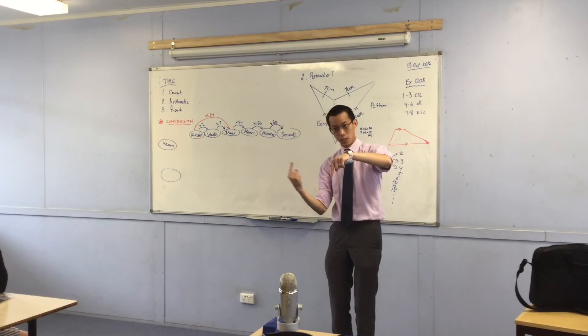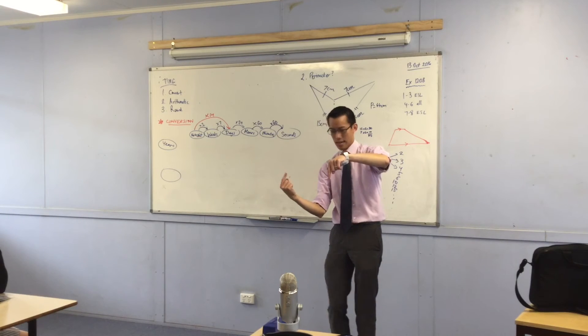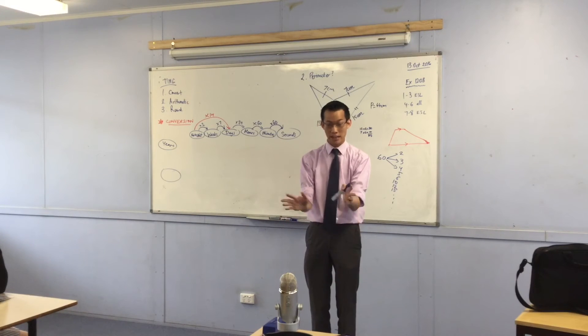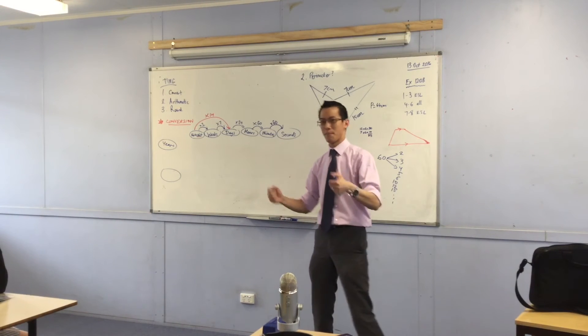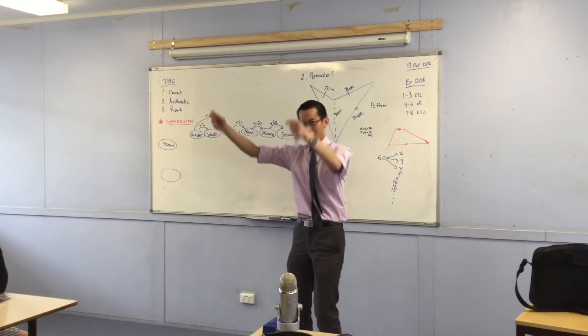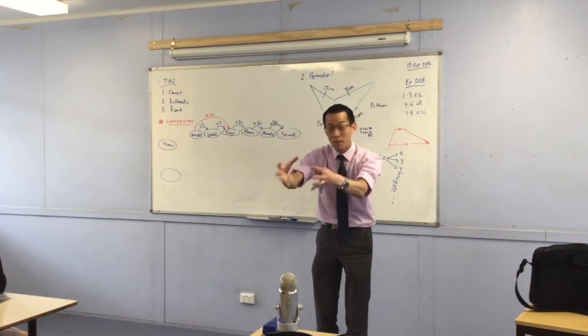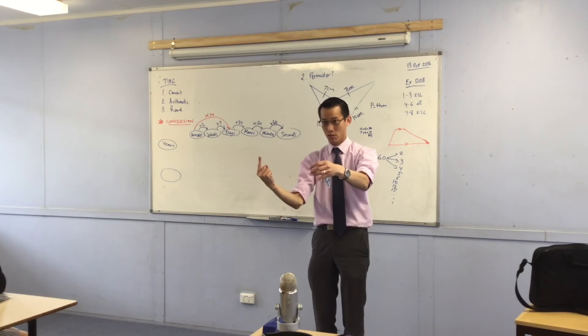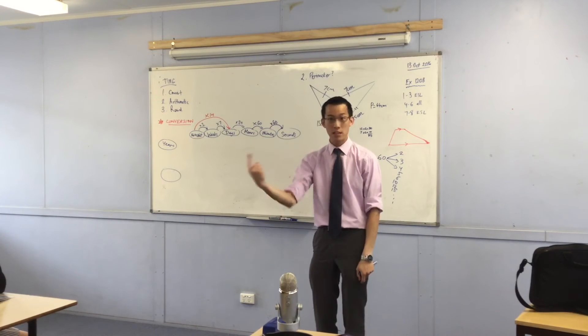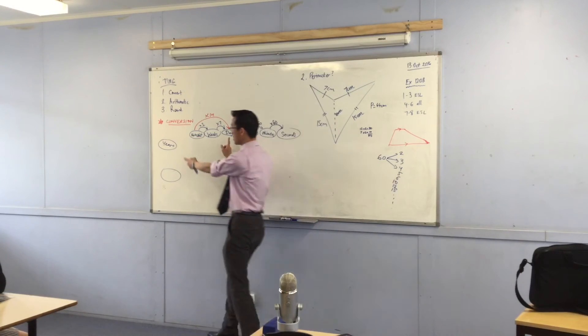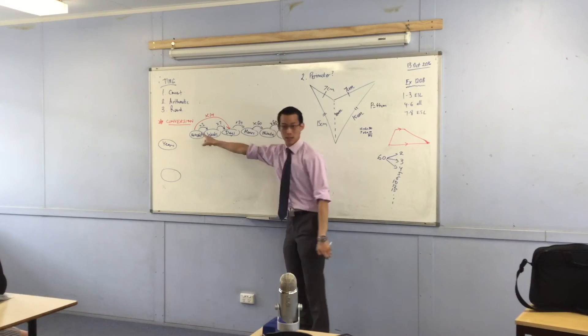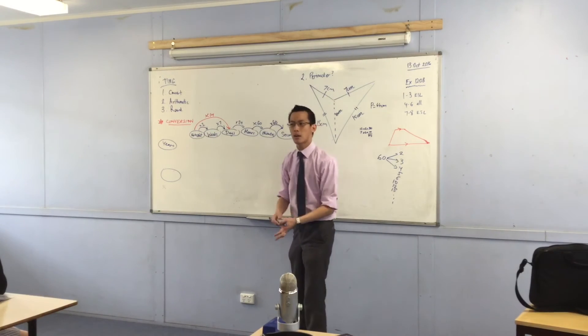So these two things, right? This spinning on the spot and this orbit, they don't have anything to do with each other, right? Like they're not connected in any way. Like for example, if there was some huge alien out there in outer space, they could grab a hold of the earth, stop it spinning. So it's not going to do that anymore, but it can keep on going around the sun. And that's just fine.